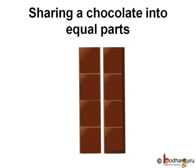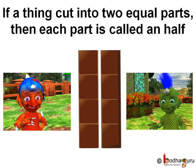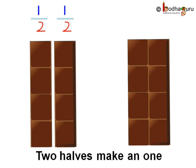So when we cut a whole thing — say the chocolate bar — into two equal parts, then each part is called a half. So the whole chocolate is cut into two halves. We write half as one by two, because one is cut into two equal parts. So half is one by two.